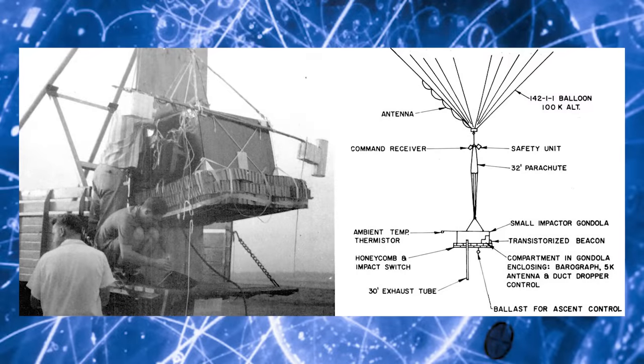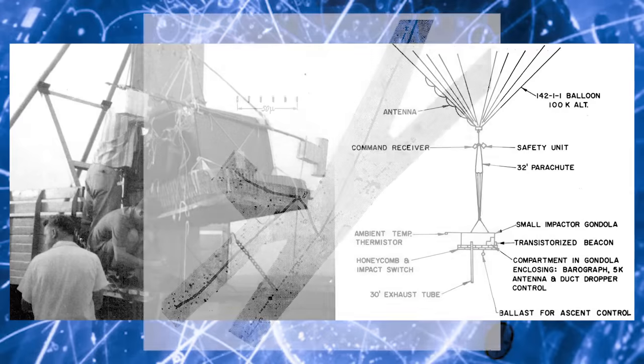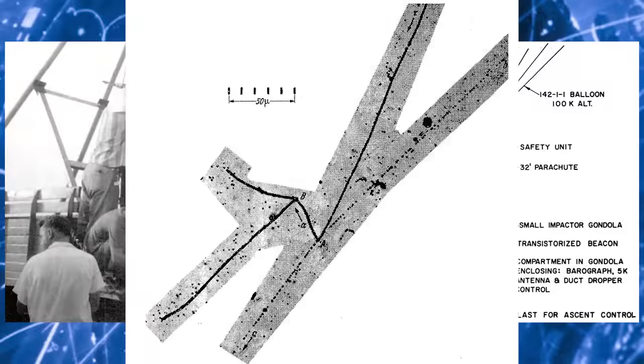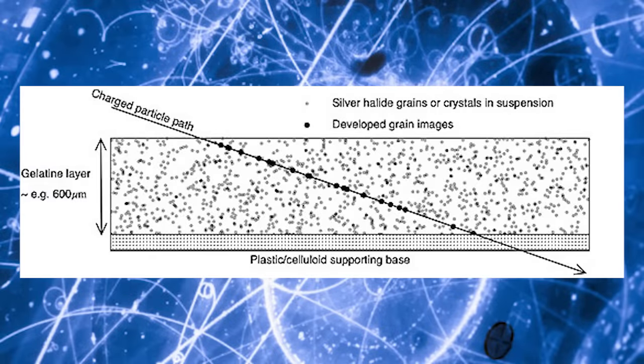Such emulsions were famously exposed to cosmic radiation high on mountains and in high altitude balloons to discover many of the charged pions and strange particles whose existence shocked elementary particle physics in the middle of the last century. Each silver halide crystal in the emulsion works as an independent charged particle detection channel, and given the high density of these particles in a typical emulsion, despite seeming relatively low-tech, emulsion detectors provide some of the best spatial and angular resolutions of any particle detection technology — spatial resolutions down to about 50 nanometers.